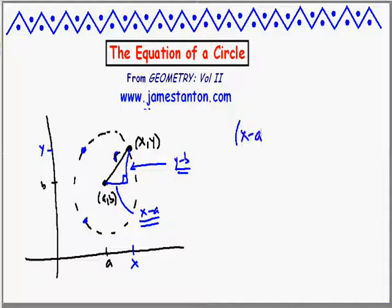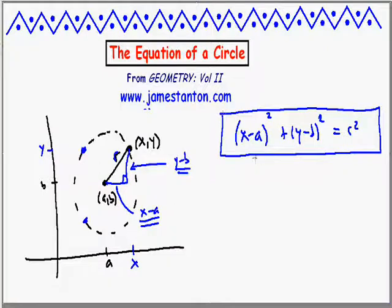So, Pythagoras theorem says, alright, for a point (x,y) to be on the circle of radius r, I must have that (x-a)² + (y-b)² equals r². There it is. There is the equation of a circle with center (a,b), and radius equal r. Beautiful.